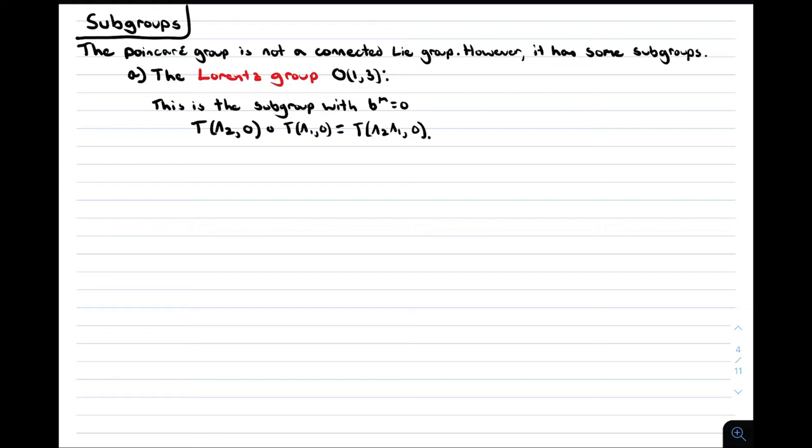This is the generalization of the orthogonal group On which preserves the length in Euclidean space that we talked about in episode 2. Preserving the length can now be understood as coordinate transformations that don't change the metric. For On the metric is just the identity matrix. In this case the metric we are preserving has one positive sign and three negative signs. So O(1,3) is the set of matrices λ^μ_ν that preserve length in Minkowski space. These matrices can have determinant plus or minus 1 and the 0-0 component is either greater than or equal to 1 or less than or equal to minus 1.